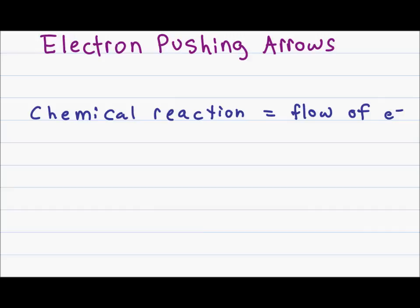A chemical reaction is simply the flow of electrons. Say I have atom A with a lone pair of electrons that wants to attack atom B. I show this reaction by starting my arrow at the lone pair on A and ending my arrow on B. Since electrons are the moving component in this reaction, the arrow has to start at the electron, not at B or any positive charge that may be on the atom.